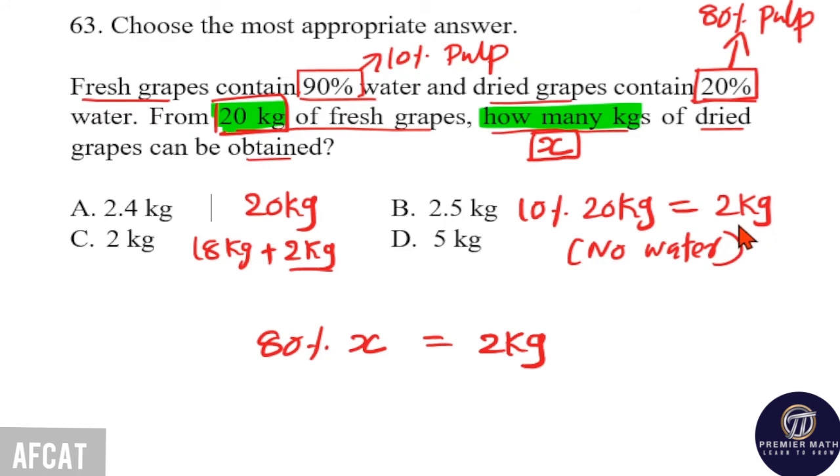We already get pulp content as 2 kg. But, this 80% of the required weight is 2 kg. Then, x is equal to the required weight, that is, dried grape weight is equal to x kg.